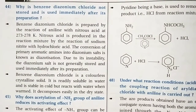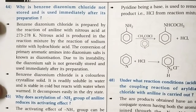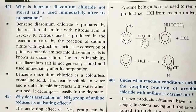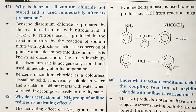Question 44: Why is benzene diazonium chloride not stored and usually used immediately after its preparation? Benzene diazonium chloride is highly unstable, therefore it cannot be stored. Instead, it is used immediately after preparation.